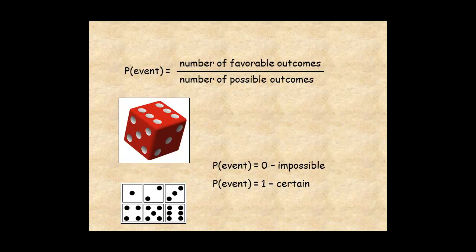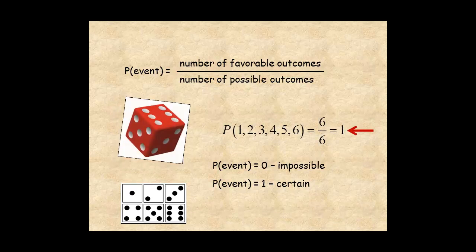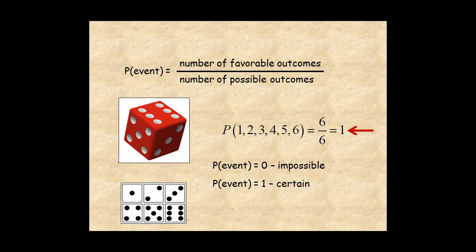And the probability of rolling a number between 1 and 6 is 1. It's certain to happen, since those are all the numbers on the dice.